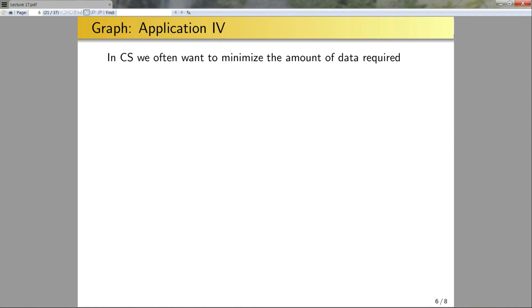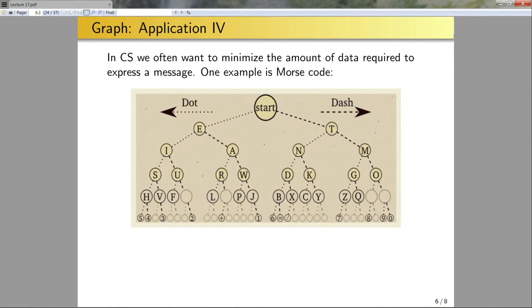Next, in CS, we often want to minimize the amount of data required to express a message. Another example would be Morse code. So in Morse code, I have a series of dots and dashes to represent each letter. For instance, E is just a dot and T is just a dash. But if I wanted to write J, that would be dot dash dash dash, or P would be dot dash dash dot.